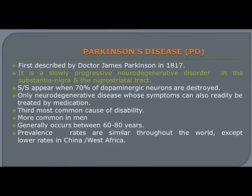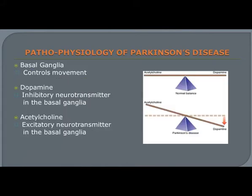Parkinson's disease is a slowly progressive neurodegenerative disorder in the substantia nigra and nigrostriatal pathway, resulting in decreased or diminished release of dopamine, so the normal balance of acetylcholine and dopamine in the CNS is affected. The substantia nigra is a midbrain gray matter portion of the basal ganglia that produces dopamine. It is the only neurodegenerative disorder whose signs and symptoms can readily be improved by medications. These signs and symptoms appear when 60 to 80% of dopaminergic neurons are destroyed. The basal ganglia controls movement through a balance of dopamine and acetylcholine.